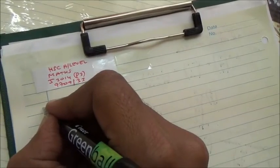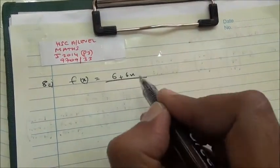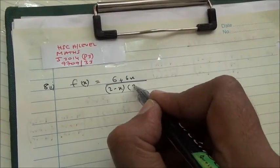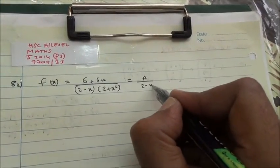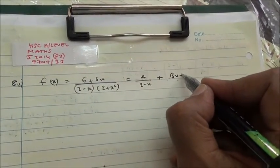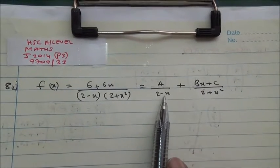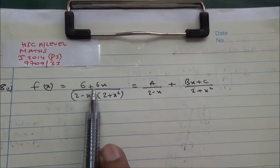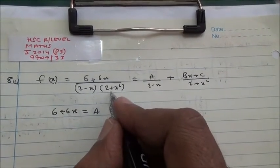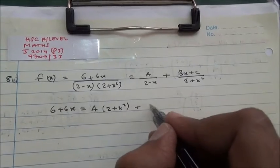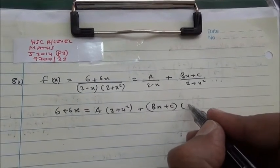Question number 8, first part. What we have is f(x) equal to 6 plus 6x over 2 minus x times 2 plus x squared. We're going to say that this can be equal to a over 2 minus x plus bx plus c over 2 plus x squared. So if we multiply through, the 2 minus x goes out, and we have 6 plus 6x equal to a times 2 plus x squared plus bx plus c times 2 minus x.